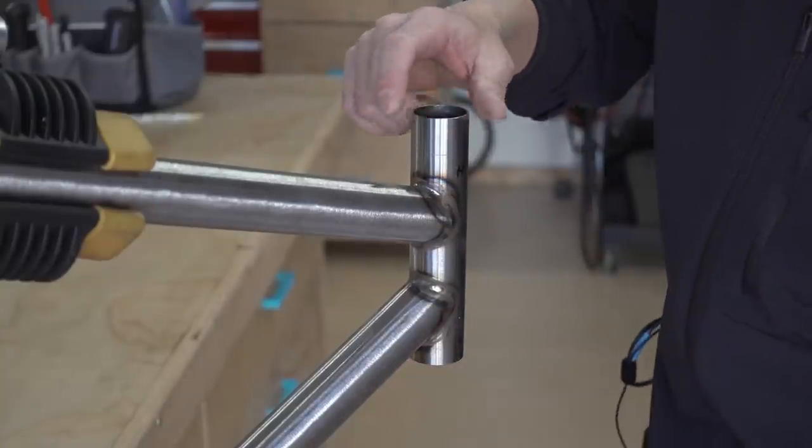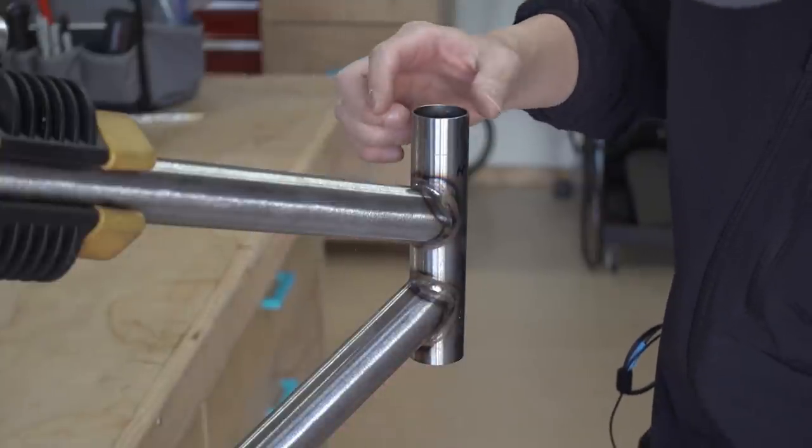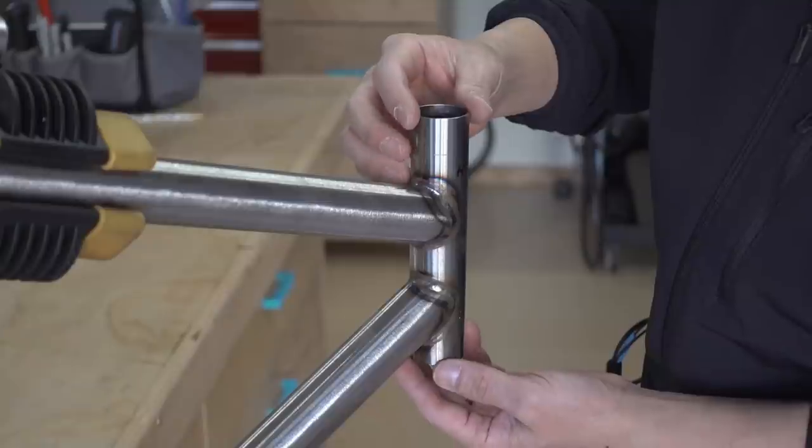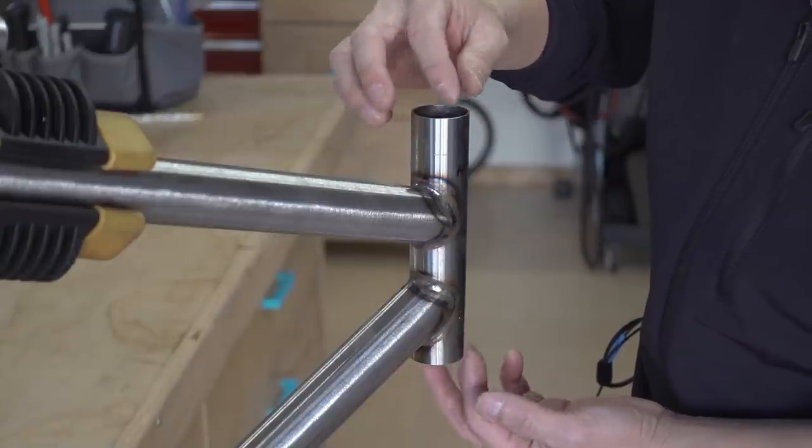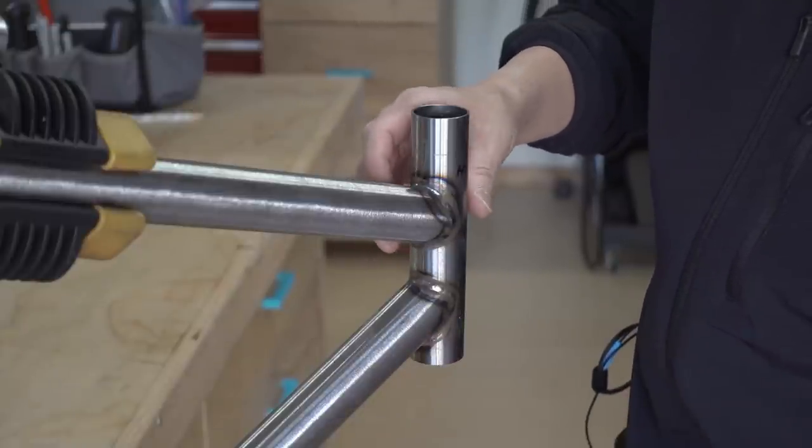Here's our head tube. This particular head tube was faced on a lathe before it was welded together. Now that it's welded, it is common practice to re-face the head tube because of distortions that may have happened during the welding process.